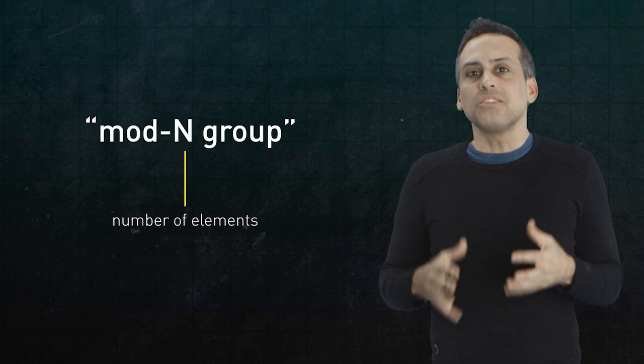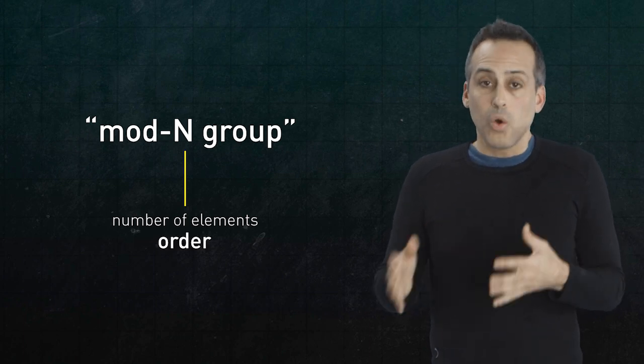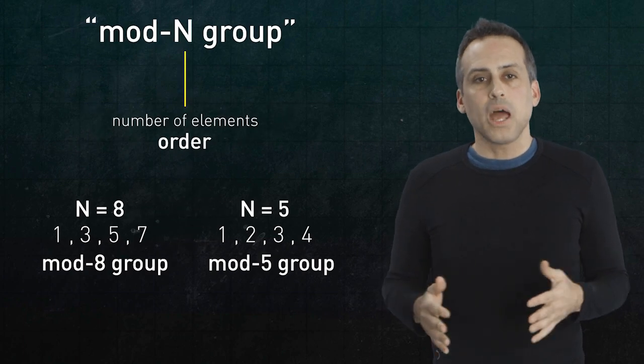The number of elements in a group is called its order. Both the mod 8 and mod 5 groups have order 4.